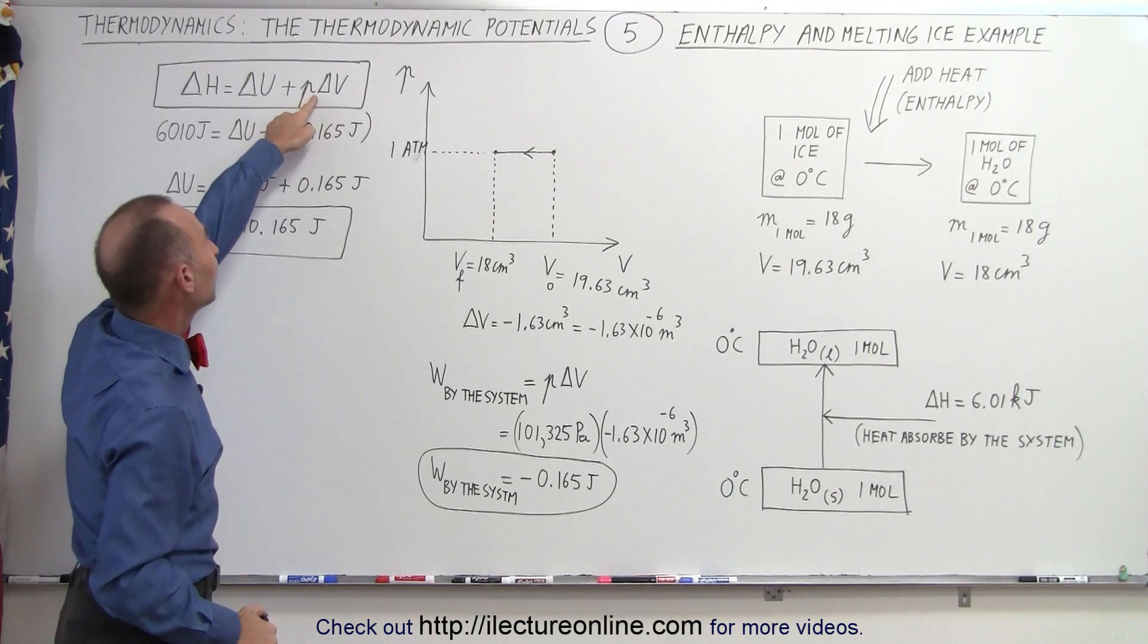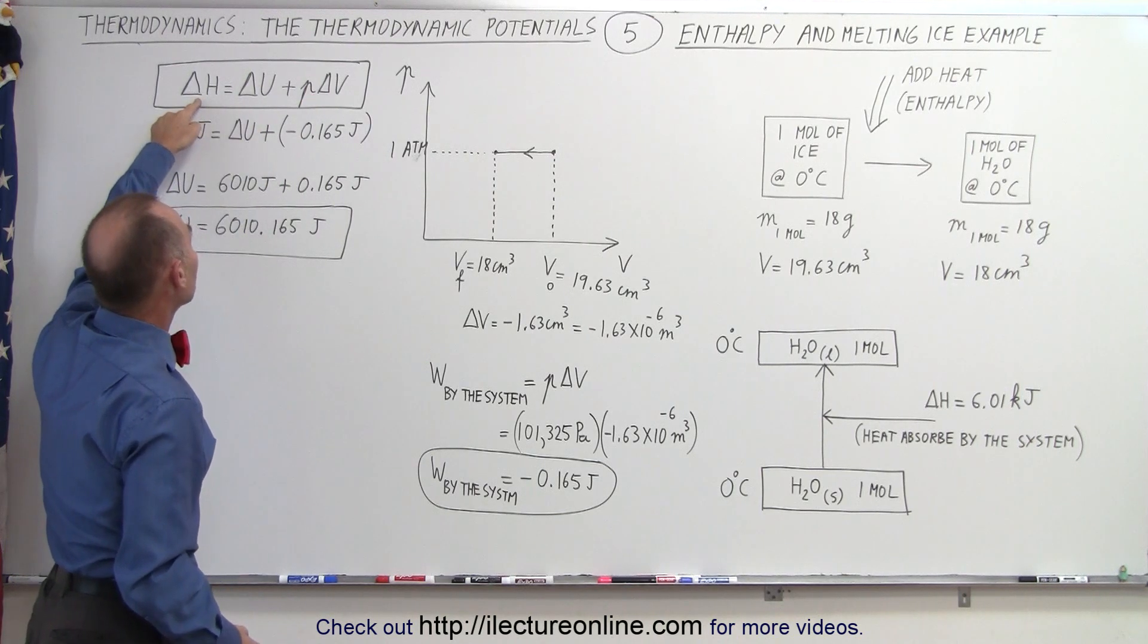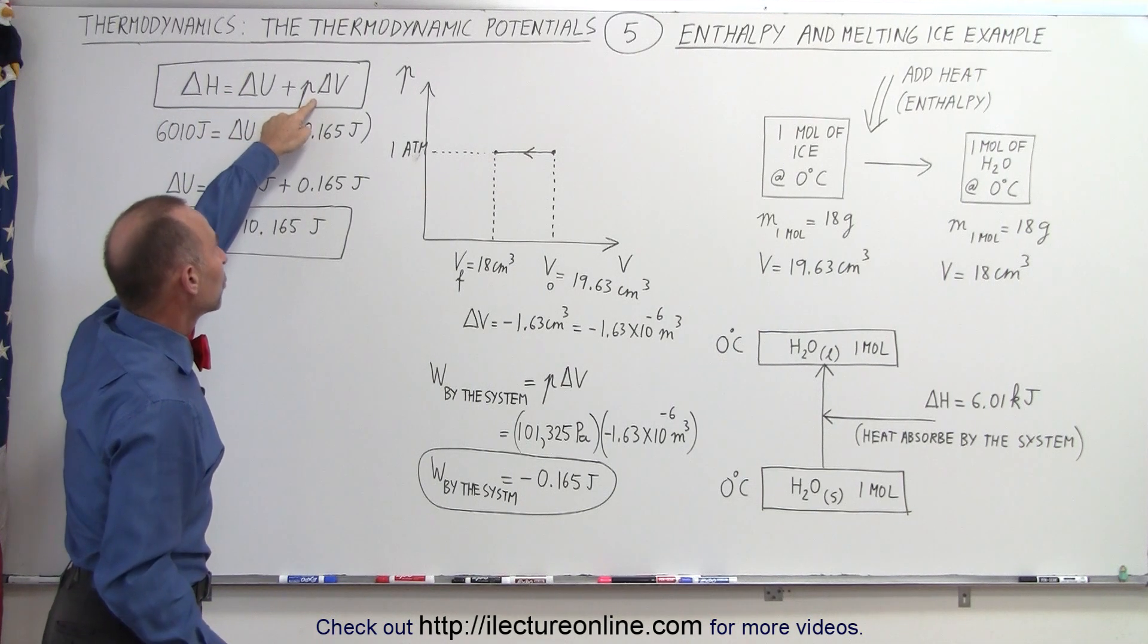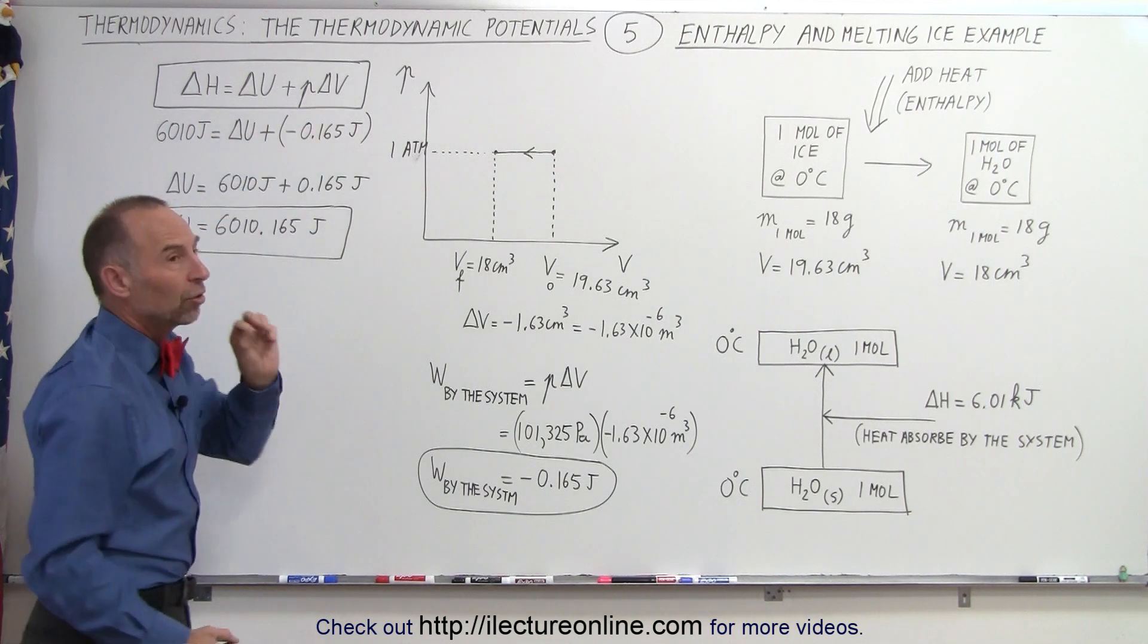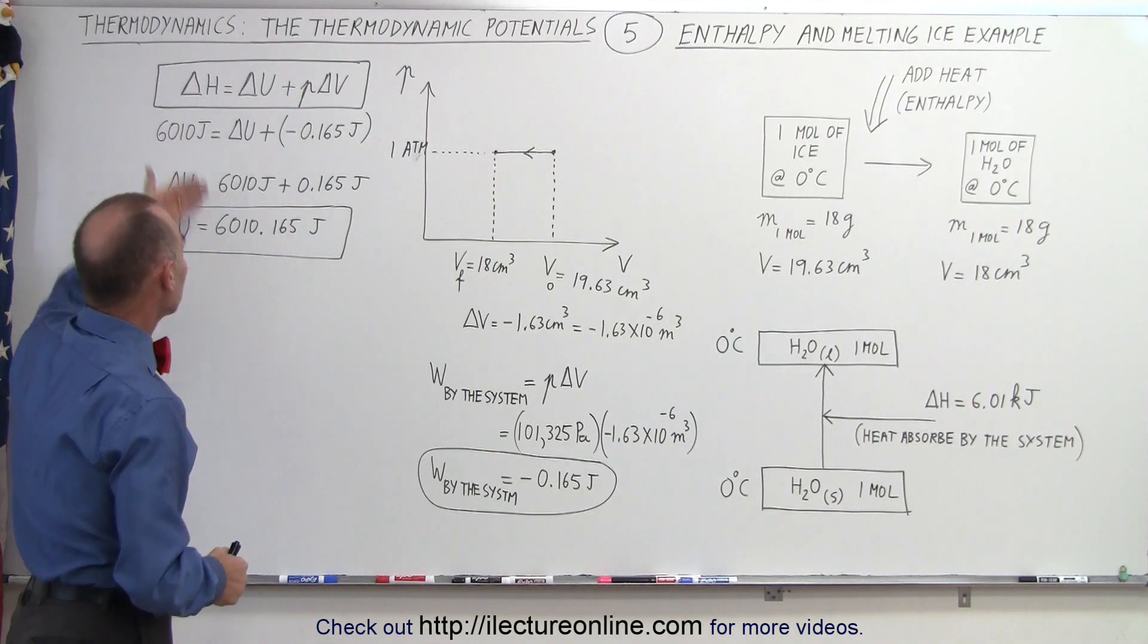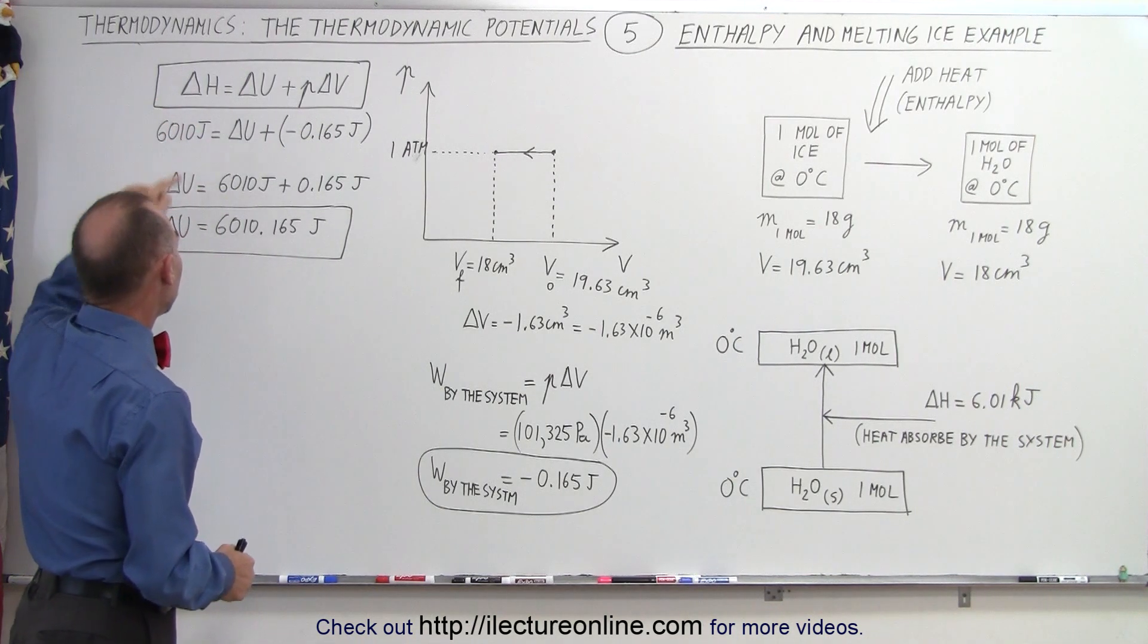And so, therefore, this term becomes negative, so the enthalpy required is a little bit less than the change in internal energy because the atmosphere did work on the system, providing a small amount of the energy required to melt the ice.